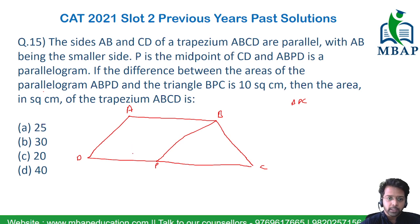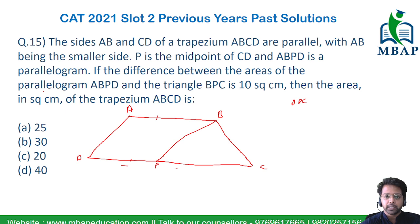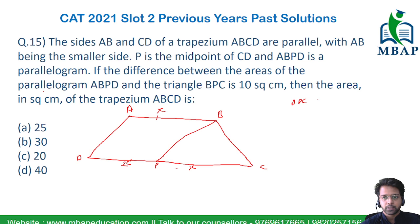In this parallelogram, the sides will be equal. Since P is the midpoint of CD, the length of PD is equal to the length of CP. Let's assume both of these to be X. So PD = X and CP = X.